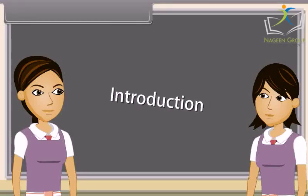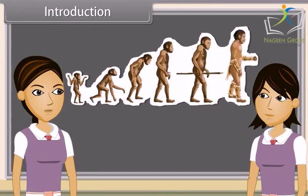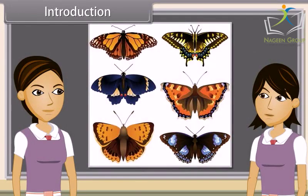Evolution is any change across successive generations in the heritable characteristics of biological populations. Variations are the structural, functional or behavioral changes from the normal characters developed in the living organisms.